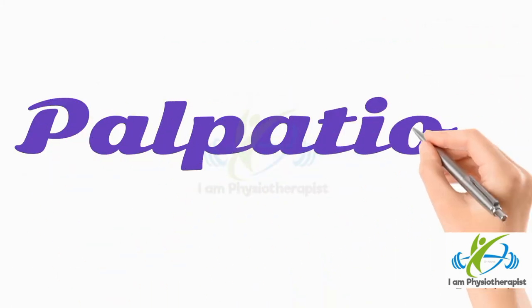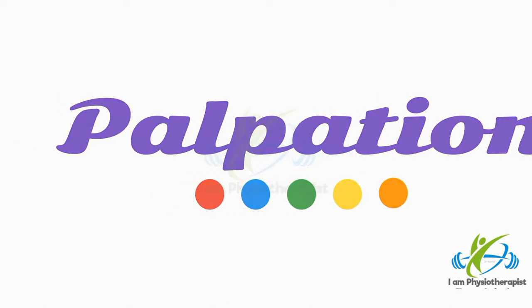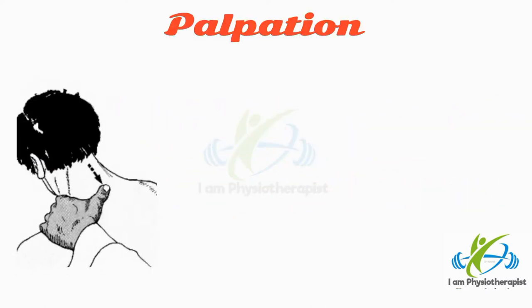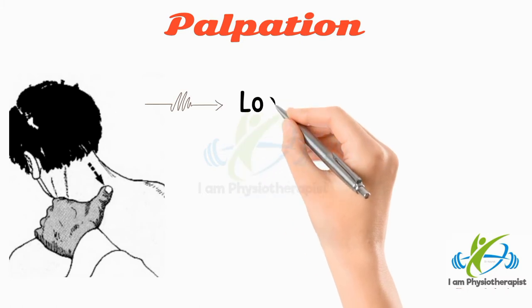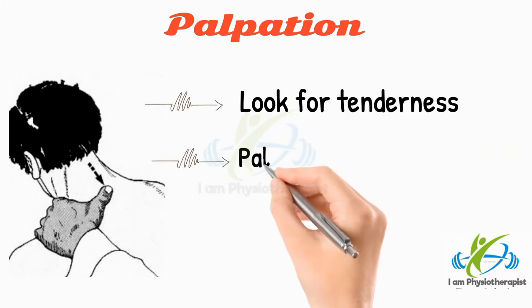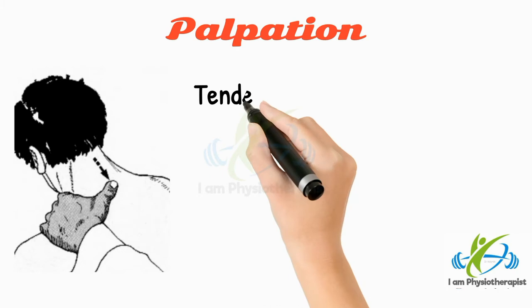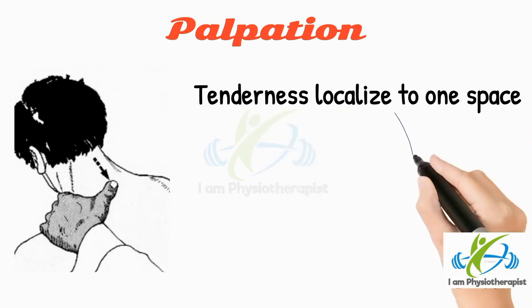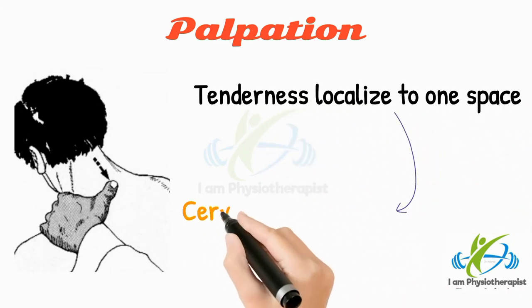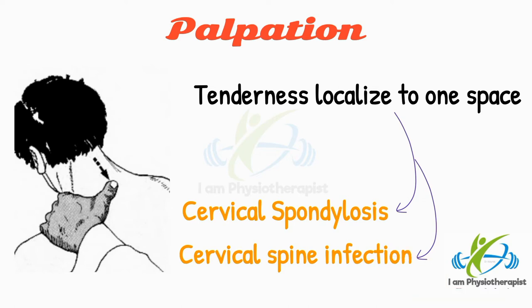The next step of cervical examination is palpation. Palpate the cervical region by looking for tenderness in the midline, palpating distally from the occiput. Tenderness localized to one space is common in cervical spondylosis, and rarely may be a cause of cervical spine infection.